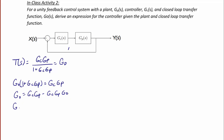Then on the right side of the equation, I'm going to factor out Gc. So I'm going to have G0 is equal to Gc·Gp times (1 minus G0). And finally, when we solve for Gc, we get that Gc is equal to G0 over Gp times (1 minus G0).